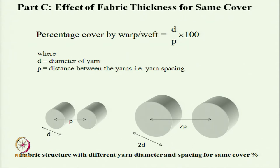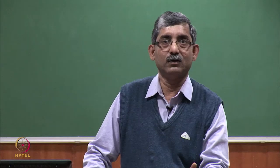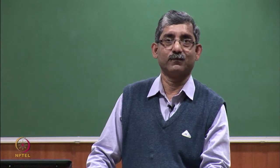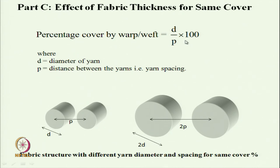Keeping the same warp cover, the weft cover was changed. The formula is D by P multiplied by 100, which gives percent weft cover, where D is the diameter of yarn and P is the distance between two yarns, called yarn spacing. So D by P is the total cover. P is the actual distance, cover distance is D/2 + D/2 = D. So percent cover equals D by P.